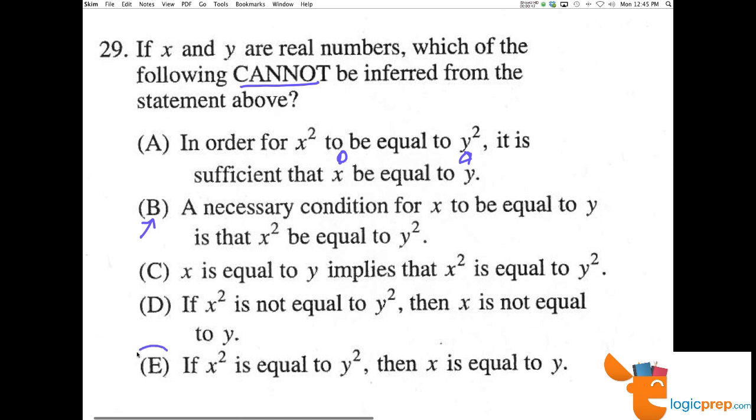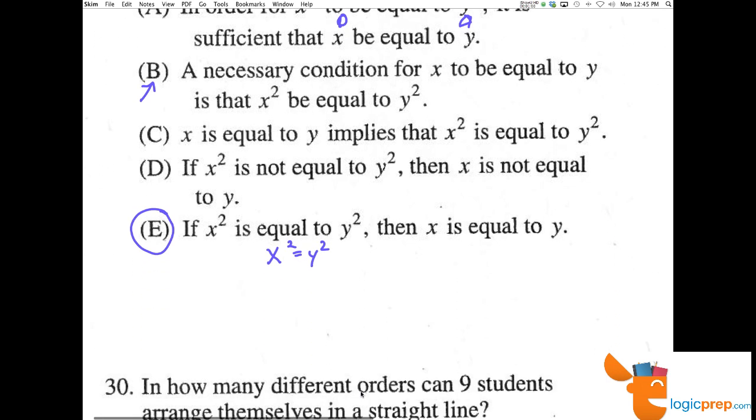Now the answer E here says if x squared is equal to y squared, then x is equal to y. You cannot infer that because if x squared were equal to y squared, that tells us that either x is equal to y or x is equal to negative y.